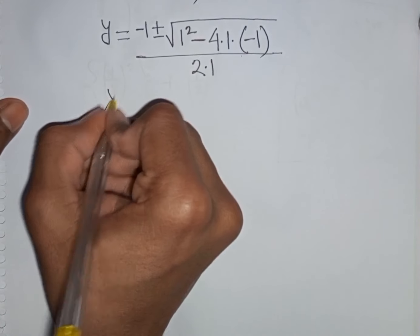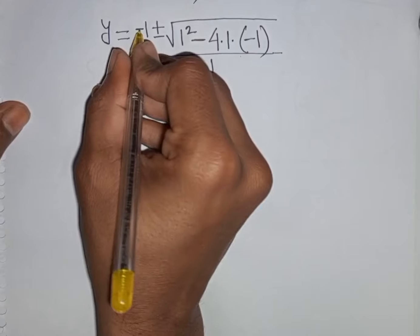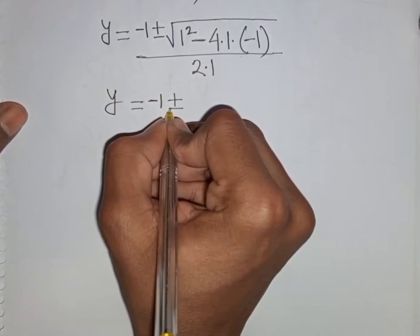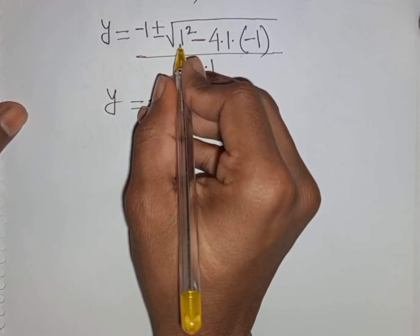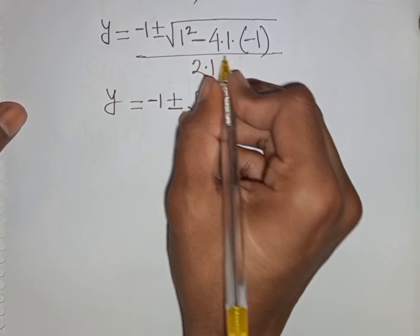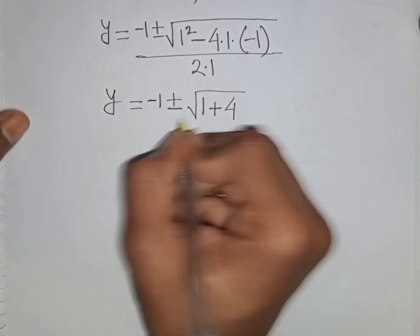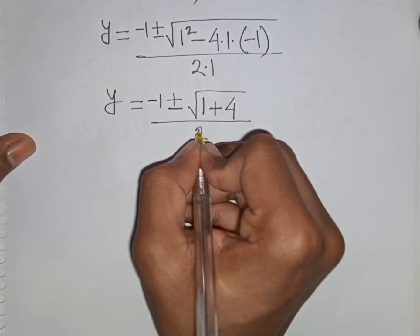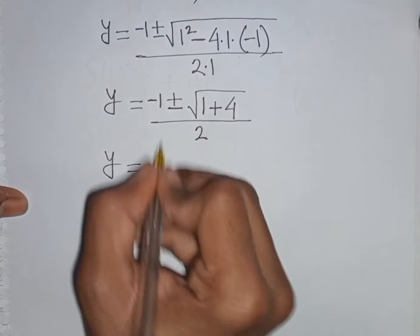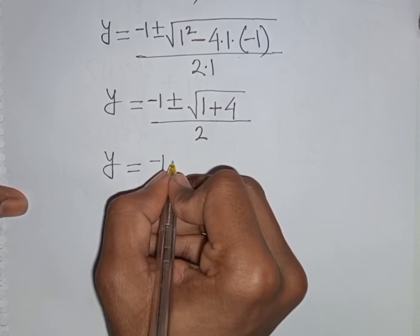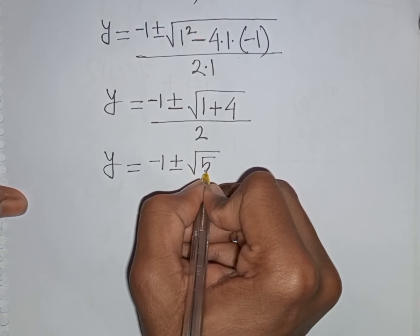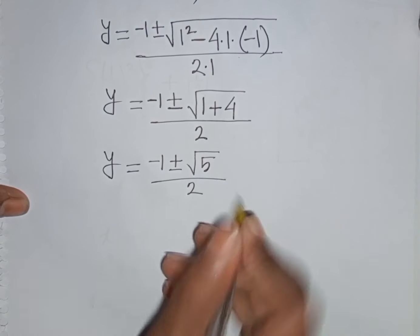We can write y = −1 ± √(1 + 4) divided by 2, which gives y = −1 ± √5 divided by 2.